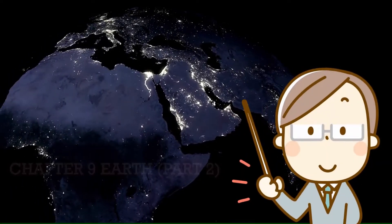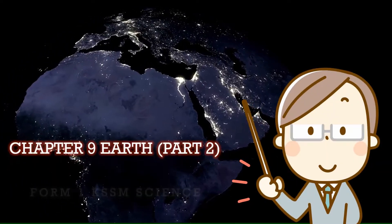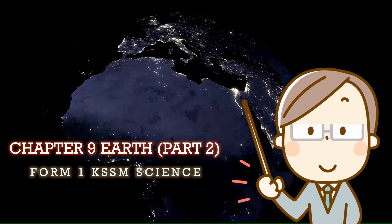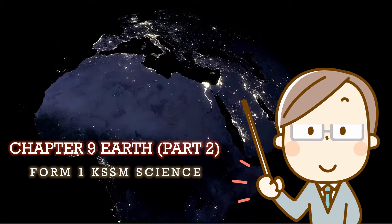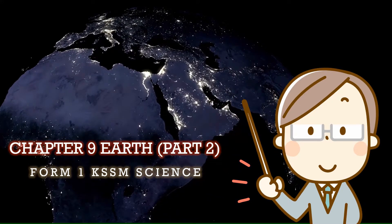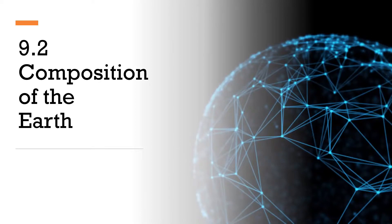Hello everyone, welcome back to Chia Chia Edu. Today we will be looking at Form 1 Science, Chapter 9, Earth, Part 2. After learning about the system and structure of the earth in our previous video, today we are going to study about the composition of the earth.